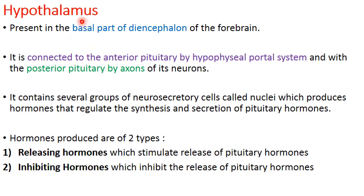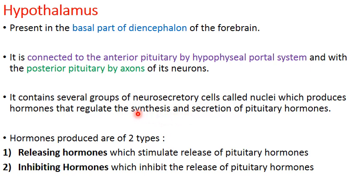The hypothalamus is called a neuroendocrine gland because it synthesizes its secretions in neurons. It stimulates the pituitary to release hormones and is connected to the anterior pituitary by a hypophysial portal system, and to the posterior pituitary by the axons of its neurons. The hypothalamus contains several neurosecretory cells called nuclei that produce hormones, stimulating the synthesis and secretion of hormones from the pituitary gland.